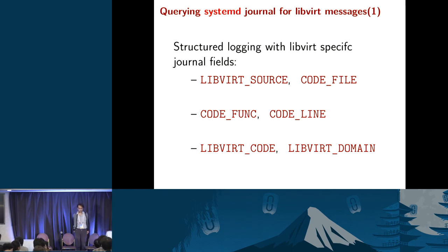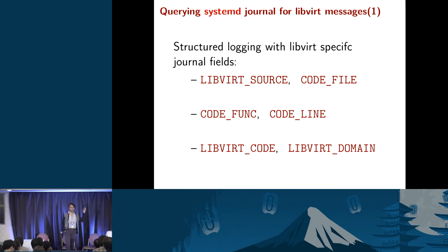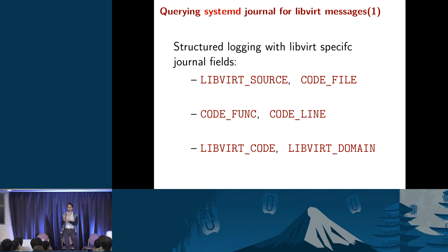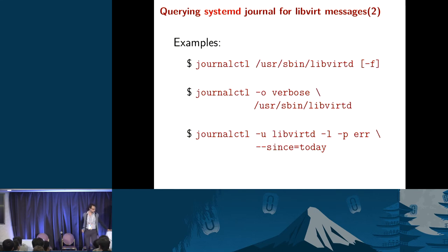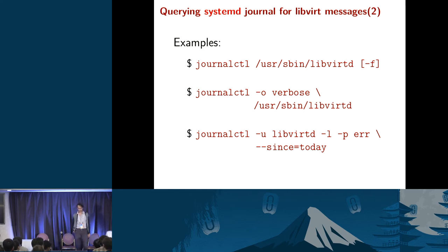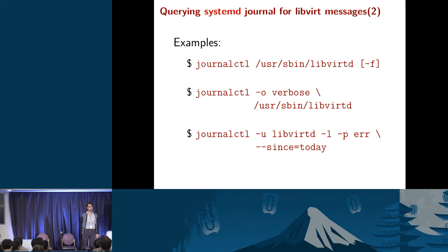The systemd journal is very useful for debugging system services and has LibVirt-specific journal fields in a structured manner. If you're seeing a LibVirt-specific error, it clearly points you to a specific source file, line, and function. Example commands: you can ask journalctl for all high-priority errors for the LibVirt daemon since today. It's very flexible and you can monitor it like `tail -f` with `journalctl -u libvirtd -f` to follow LibVirt daemon-related errors.